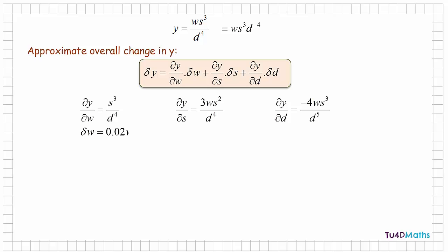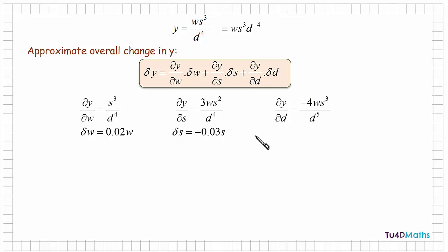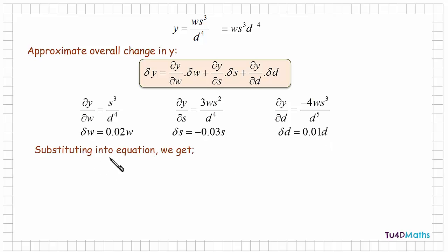Now we're told in the question that the small change in w increases by 2%, so dw is equal to 0.02 times w. And s decreases by 3%, so the small change in s is going to be minus 0.03 times s. And d increased by 1%, so the small change in d will be 0.01 times d. Substituting these values for the partial derivatives and the small changes into the overall change in y gives the following expression.